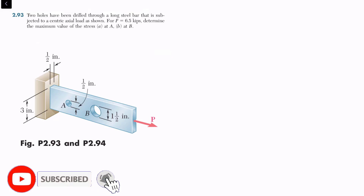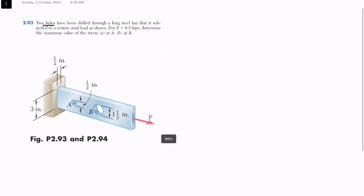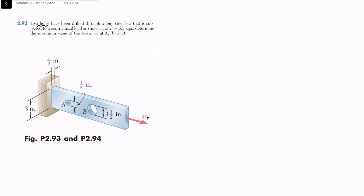Welcome back. Problem 2.93. In this problem, two holes have been drilled through a long steel bar that is subjected to a centric load as shown. For P equal to 6.5 kips, determine the maximum value of stress at A and at B. We have to find maximum stress at point A and maximum stress at point B.